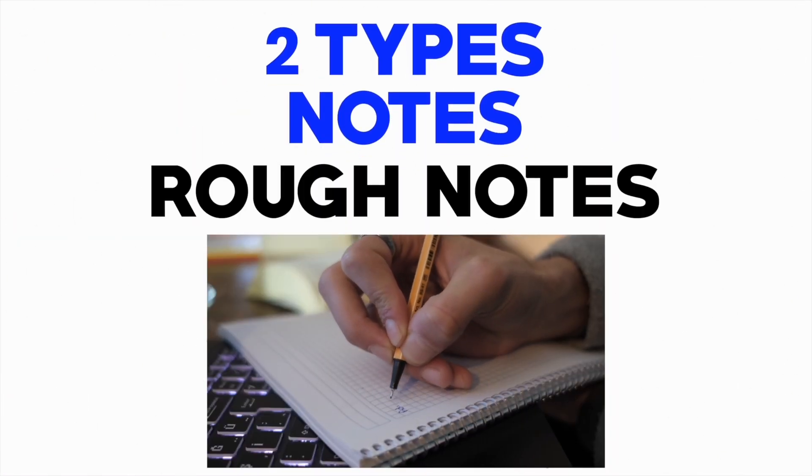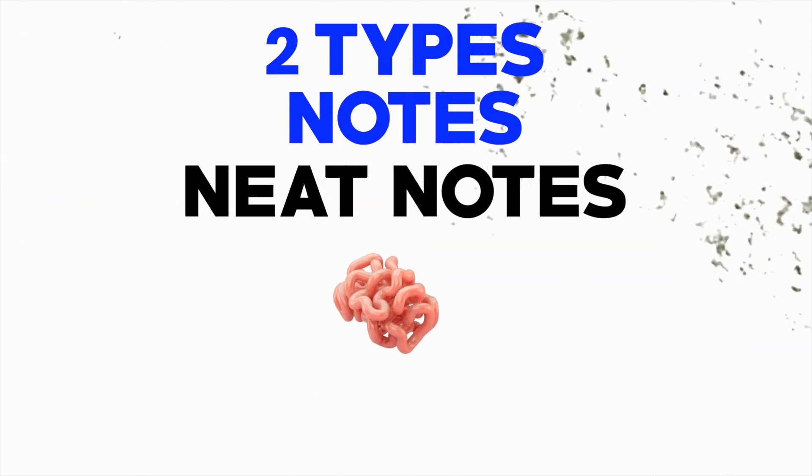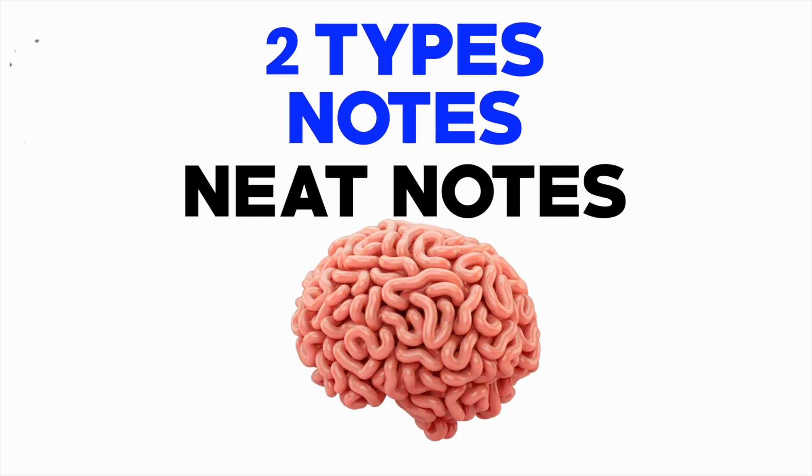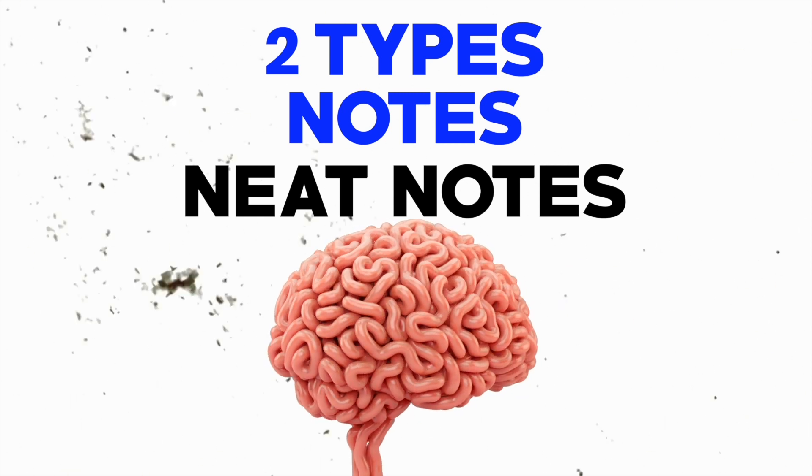You can either make rough notes where you're capturing stuff down as you're going along, or secondly your neat notes. Your neat notes is your brain processing all of this information into something that's useful to you.